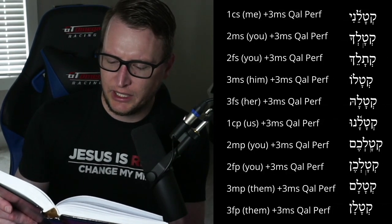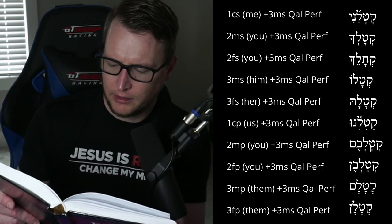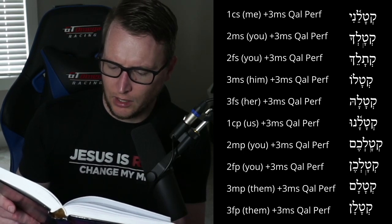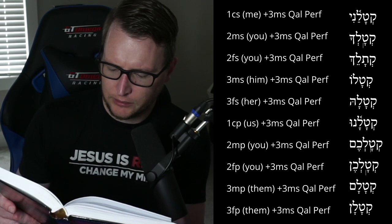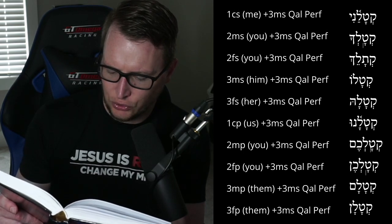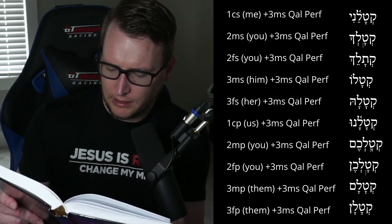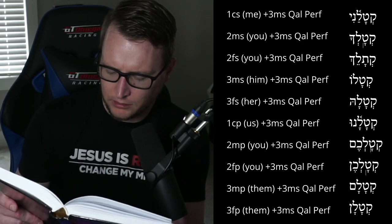Spitting out the examples with our verb 'katal,' meaning 'to kill': kitalani — he killed me; kitalcha — he killed you; kitalech — he killed you; kitalo — he killed him; kitala — he killed her; kitalanu — he killed us; kitalchem — he killed you; kitalchen — he killed you; kitalam — he killed them; kitalan — he killed them. That's with the perfect conjugation.